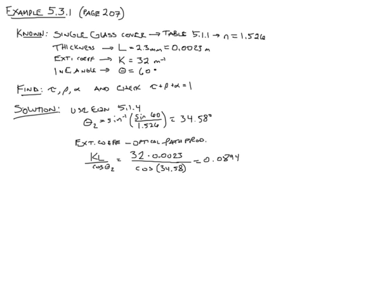The next piece of the puzzle is to calculate tau sub a using equation 5.2.2. Tau sub a equals exponential of negative 0.0894, which gives us 0.915. Note that this is not the transmissivity. We still have to average for the parallel and perpendicular components of polarization in the glass.